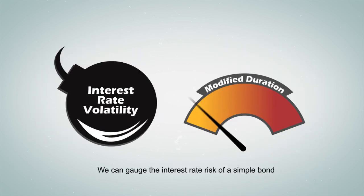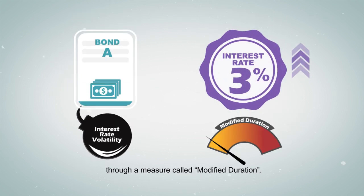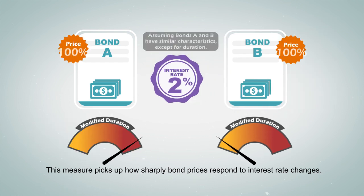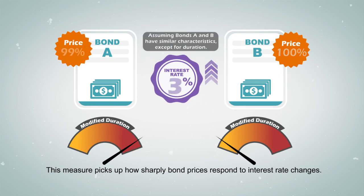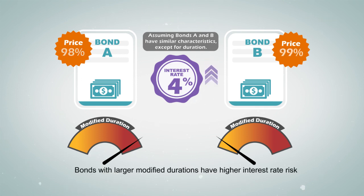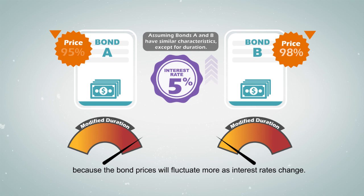We can gauge the interest rate risk of a simple bond through a measure called modified duration. This measure picks up how sharply bond prices respond to interest rate changes. Bonds with larger modified durations have higher interest rate risk because the bond prices will fluctuate more as interest rates change.